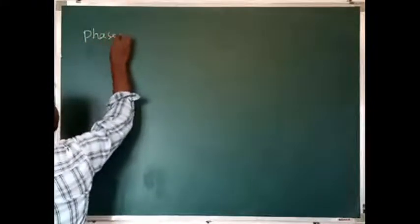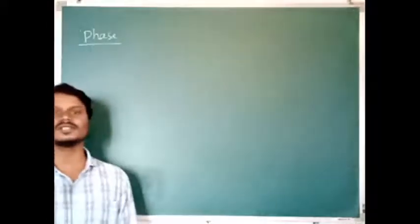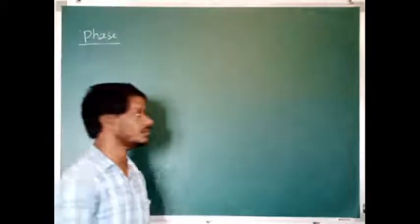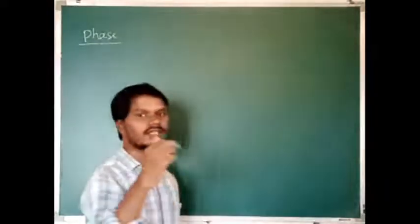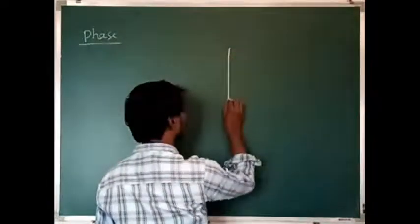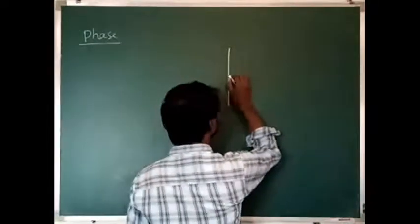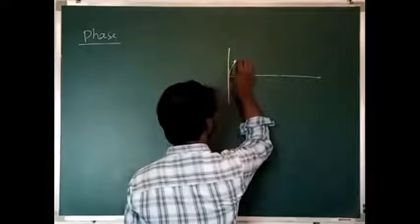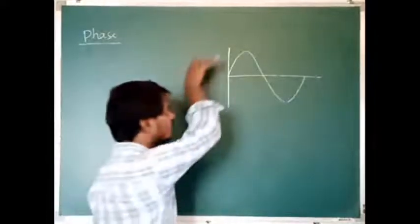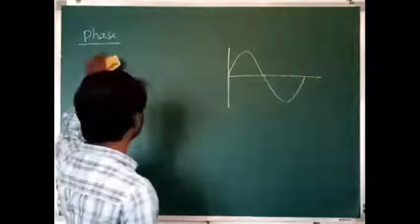The first term is phase. So let us discuss what do you mean by phase. Phase is nothing but it is the state of vibration of the particle, or it is the location of vibration of the particle of the medium. Due to the vibration of the particle of the medium, the wave is propagating. Now let us consider it is a light wave propagating in the forward direction. So let us define the phase now.